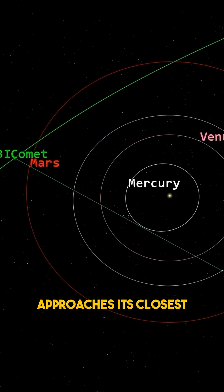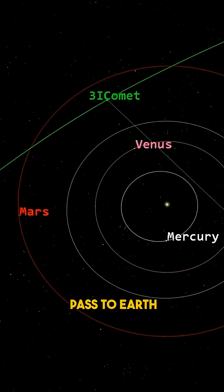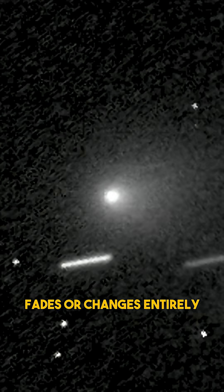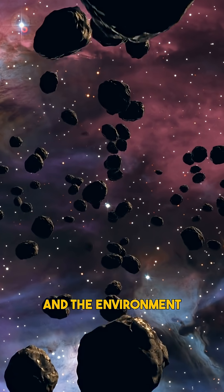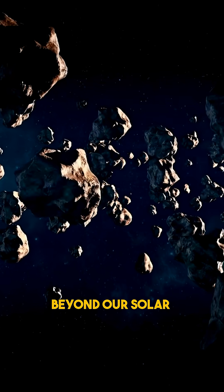As 3i Atlas approaches its closest pass to Earth, researchers are watching closely to see whether the heartbeat strengthens, fades, or changes entirely. Every cycle could offer clues about the object's internal structure and the environment where it formed beyond our solar system.